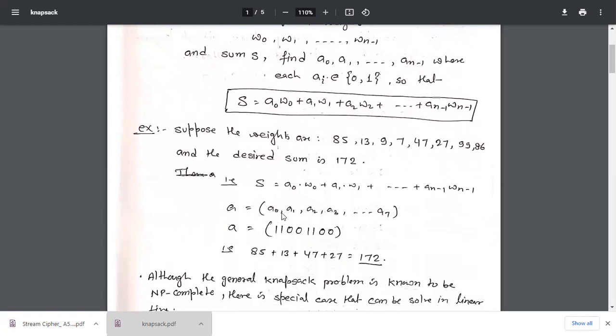How we can get this? We will simply multiply with this. So 85×1 = 85, 13×1 = 13 plus 0 plus 0. Both terms will be 0. Then again 47 plus 27 then 0, 0. Finally when we sum these numbers we get 172. So a is 11001100.